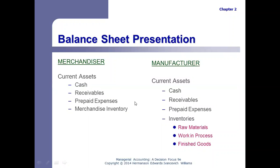For a manufacturing company, there are three different types of inventories: raw materials inventory, work in process inventory, and finished goods inventory. In financial accounting, you learned that a merchandiser has one inventory classification called merchandise inventory — the stuff ready to be sold but not yet sold. A manufacturer has those three different categories.